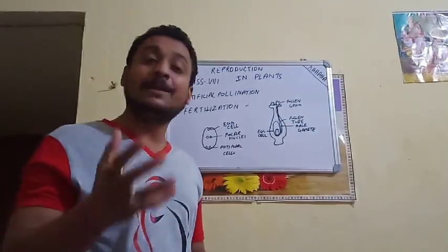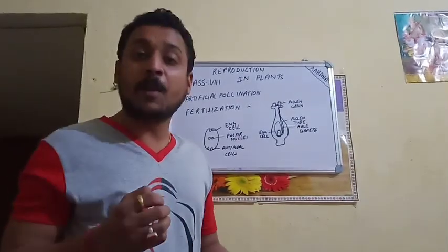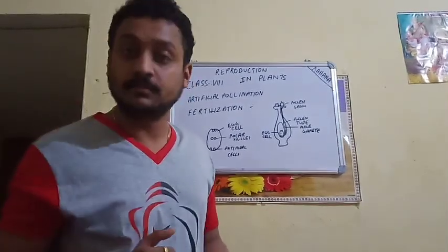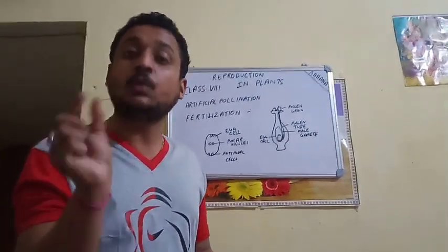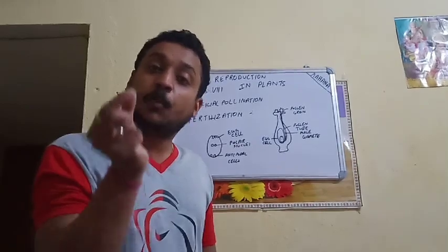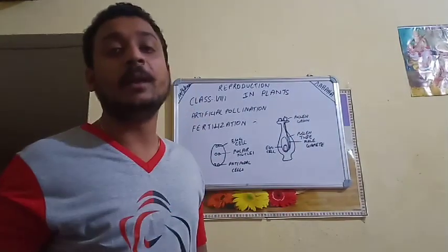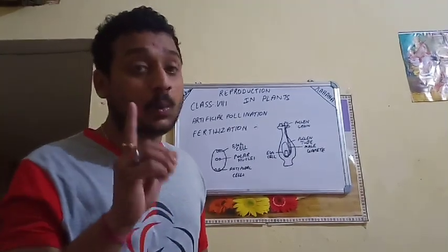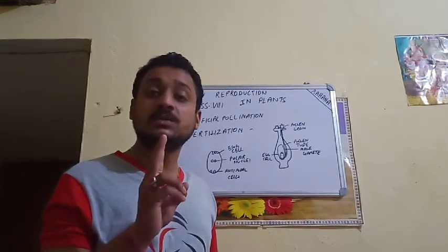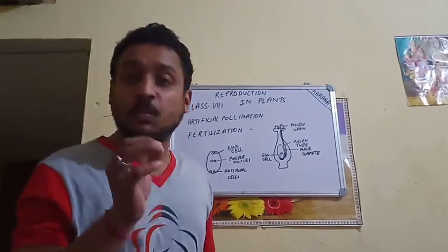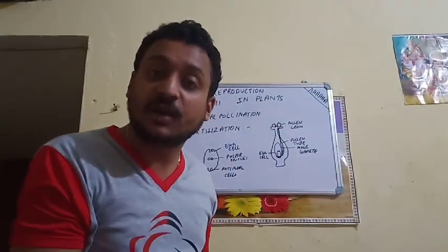Let's say the male plant is very much disease resistant and the female plant is very much high yielding. The pollen grain of the male plant will be collected and we will put that pollen grain on the stigma of the female plant, which is the high yielding variety. So the male plant was disease resistant and the female plant was the high yielding variety.